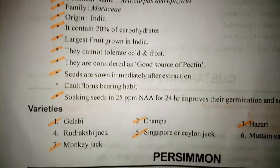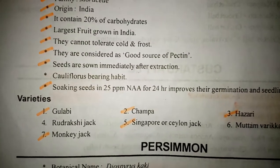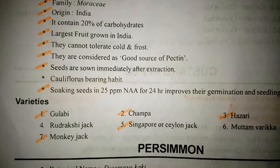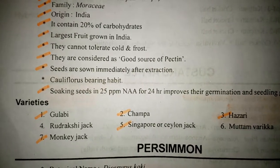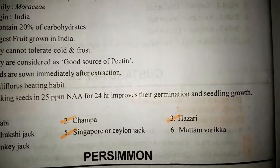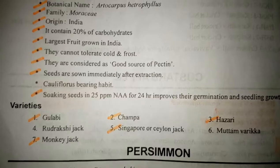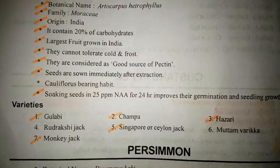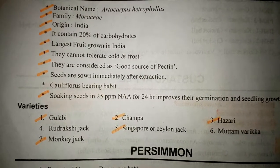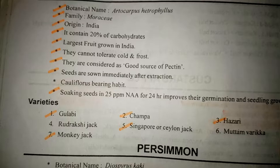Now it's Jackfruit. Its botanical name is Artocarpus heterophyllus. It contains 20% carbohydrates and is the largest fruit grown in India. Jackfruit cannot tolerate cold and frost, and is considered a good source of pectin. Seeds are sown immediately after extraction. Soaking seeds in 25 ppm IAA for 24 hours improves germination and seedling growth.